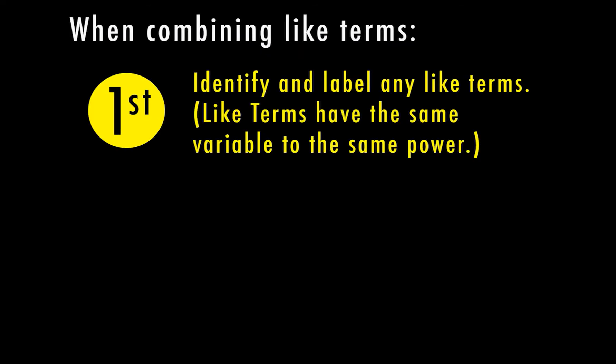When combining like terms, the first thing we want to do is identify and label any like terms. Like terms are going to have the same variable to the same power. So let's go ahead and do a couple of examples to explain this. The first step is identifying and labeling any like terms.